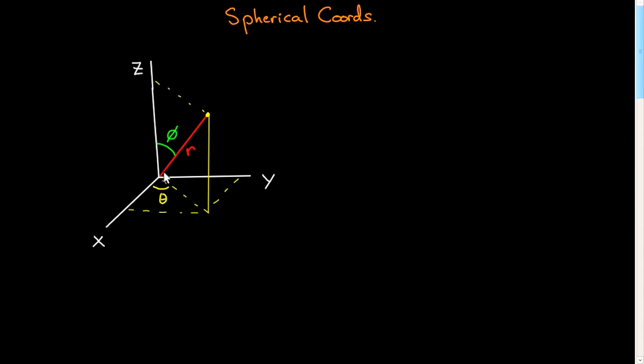Well, let me just say, r is the distance from the origin to the point. So that's the r coordinate. Phi is the angle that that radial vector makes with the z-axis.